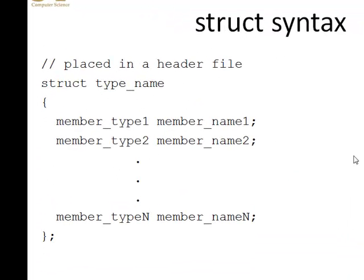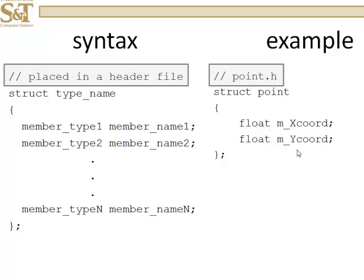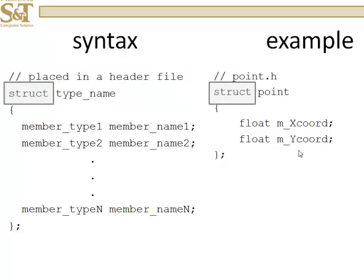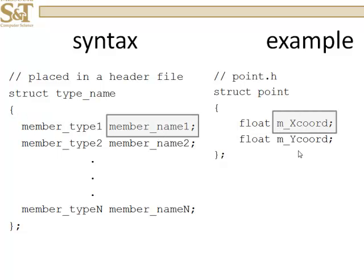For a struct, it's going to be the keyword struct, your type name, and then member variables. In this case, in our example, you're going to place this in its own header file, called, say, point.h. The keyword struct indicates to the compiler that this is a type that you are inventing. You're going to name it point. That's the type name, and then your member variables will be, well, the first one is member variable of type float. And its name is m_Xcoord.